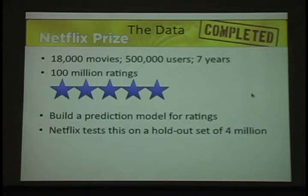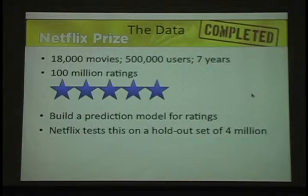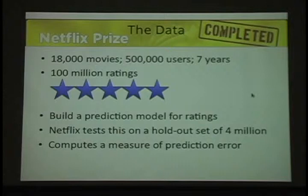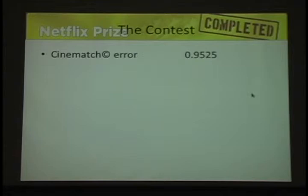They designed a competition: they made 100 million ratings available but kept out a set of 4 million ratings to test your answer on. It's not enough to say you can predict every number in the big database very well, because you have the database to build your model on. They're hanging on to 4 million ratings and checking your model on the new set. They compute a measure of prediction error — the sum of squared differences. Their program CINEMATCH gave a prediction error of 0.9525, and they asked for a 10% reduction, meaning you had to get to 0.8572.